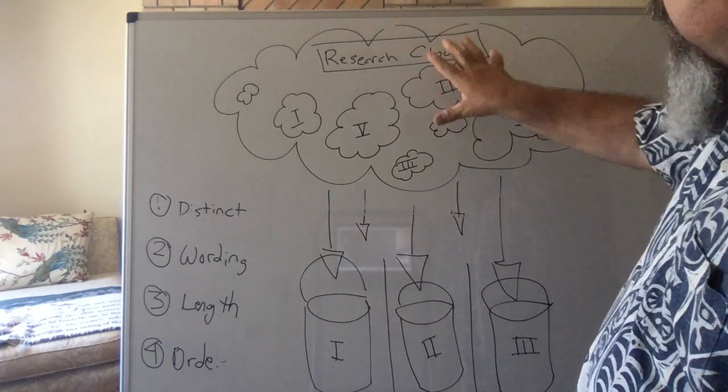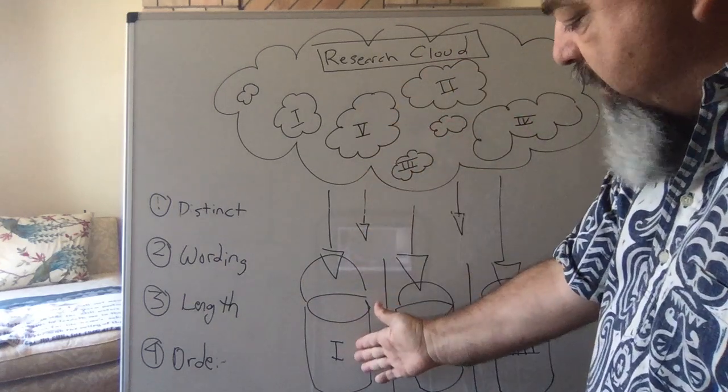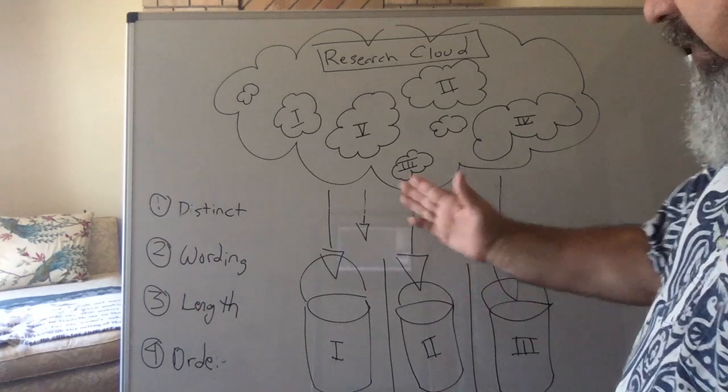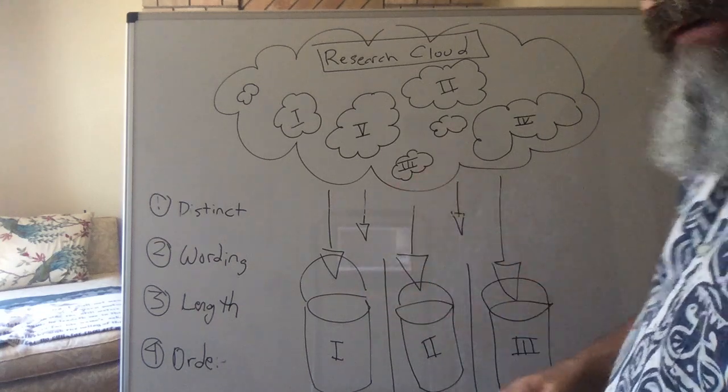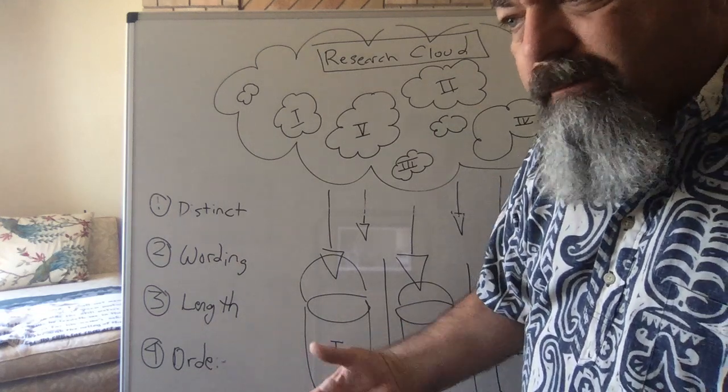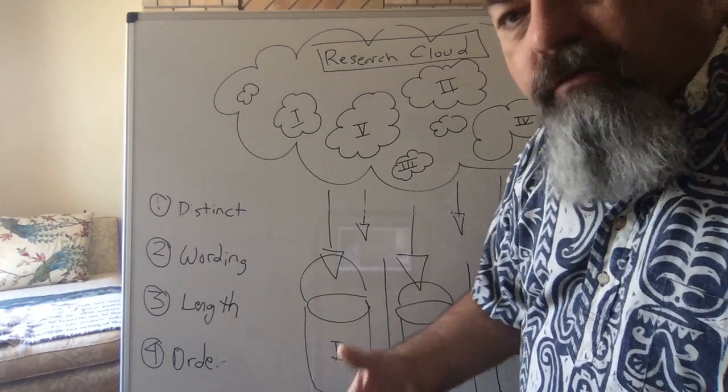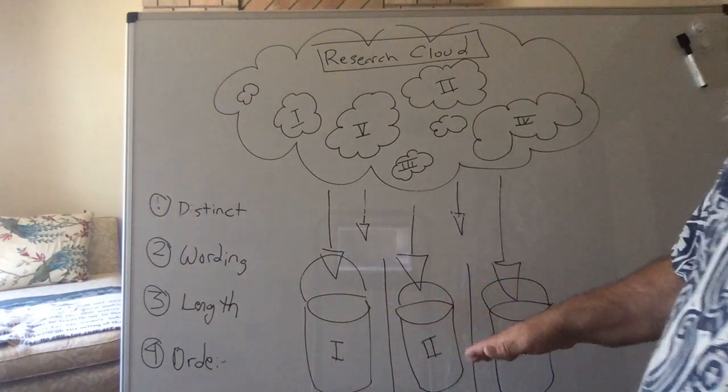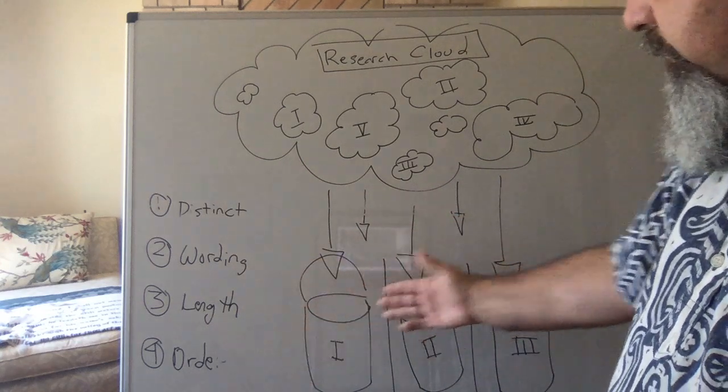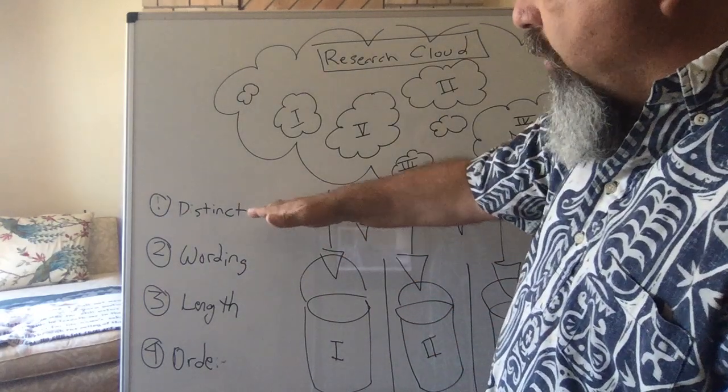We got our research information, we begin to see what our main points might be, and then they come down here: main point number one, main point number two, and main point number three. Clear, distinct from each other. I have four comments about your main points down here. This is covered in the textbook, but just to touch on it clearly.